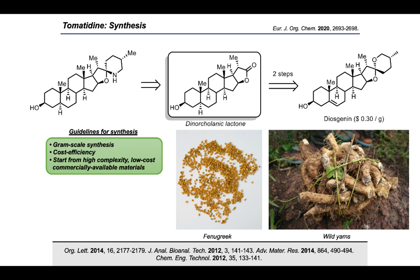The commercial product diosgenin bears a methyl group at the C25 position with the R configuration, but our target contains an S methyl at C25. A simple ring opening, nitrogen substitution, and ring-closing sequence would be impossible, which is why we needed to cut diosgenin's F-ring into the lactone and then graft an asymmetric synthon containing the correct stereocenter.